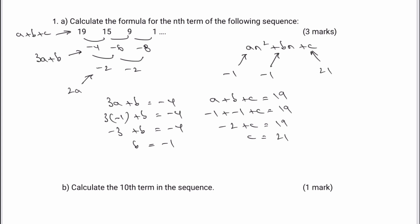So in terms of the actual nth formula, I could write that if I wanted to as minus 1n squared plus minus 1n plus 21. But it's just a little bit clumsy to do that, so I'd write it without the 1s and obviously without the plus and the minus in the middle there. So I'm going to write this as minus n squared minus n plus 21, and that would be the answer to that particular question.